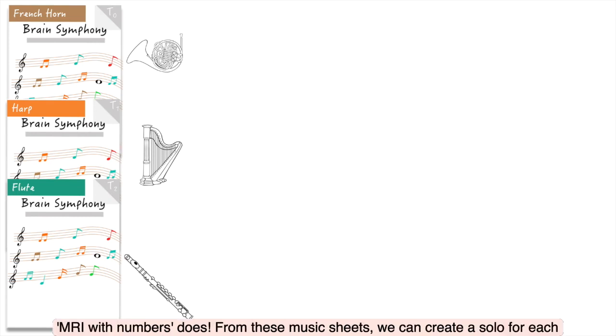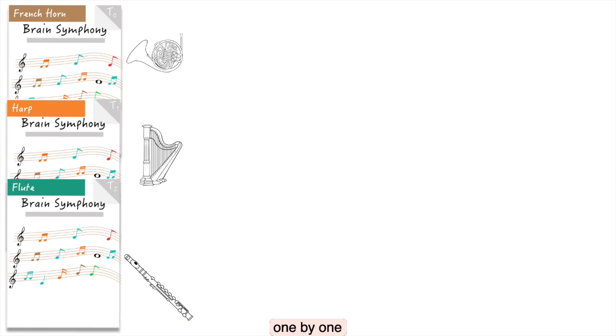This is what MRI with numbers does. From these music sheets, we can create a solo for each instrument. Let's hear the symphony again, but this time each instrument will play one by one.